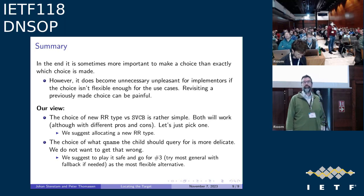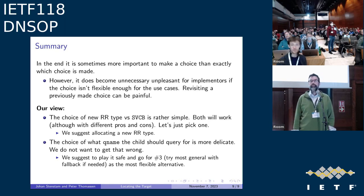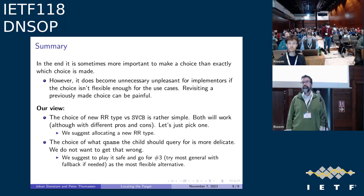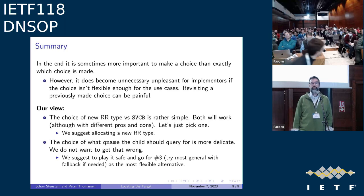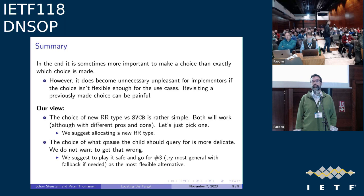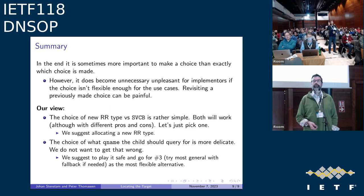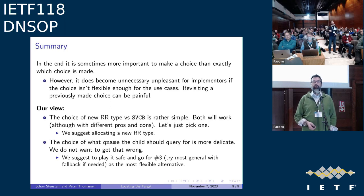Eric Ostergren, Akamai: If you want to be able to put it at the zone apex with the zone cut, you probably do want a different record type — having SVCB there is ambiguous as to what it is. If you would only ever use it with an underscore prefix label, you could use SVCB, but I completely agree.